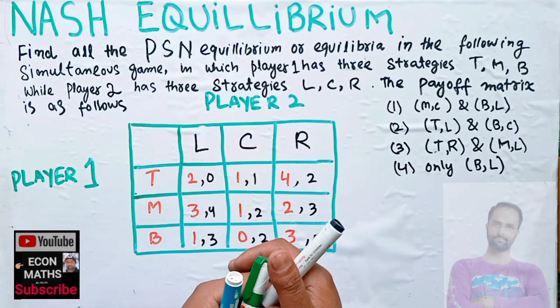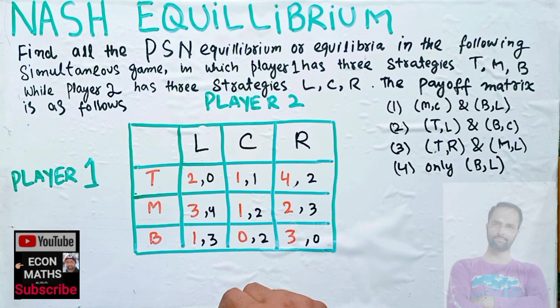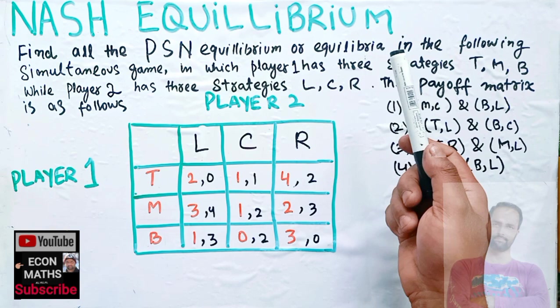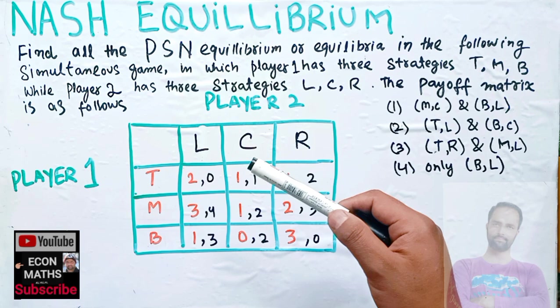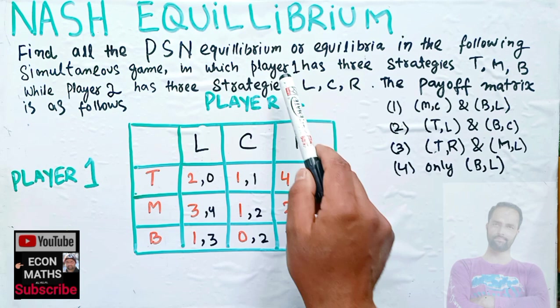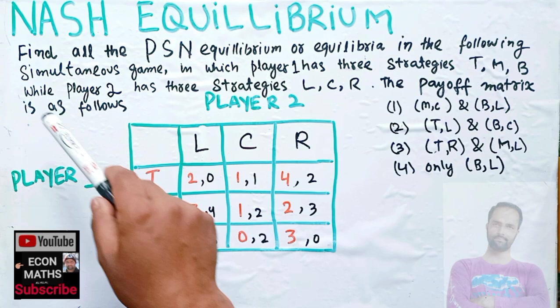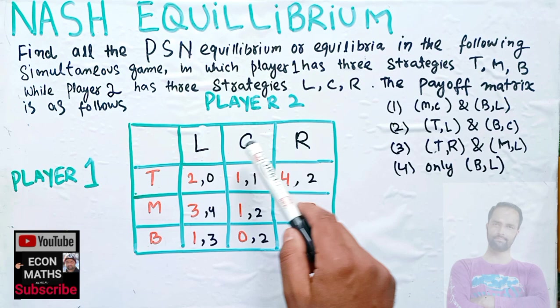Let us solve a question on Nash equilibrium. This question was asked by a brother on WhatsApp. The question is: find all pure strategy Nash equilibrium — meaning this question may have one Nash equilibrium or more than one. In the following simultaneous game, player one has three strategies T, M, and B, while player two has three strategies: L, C, or R.